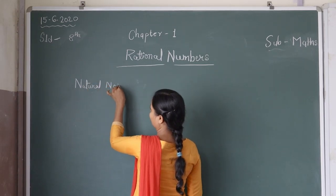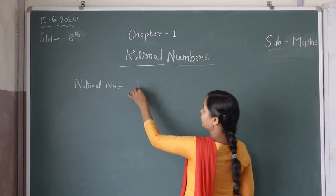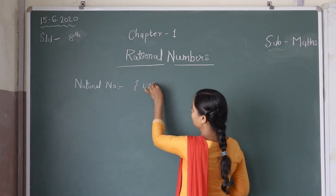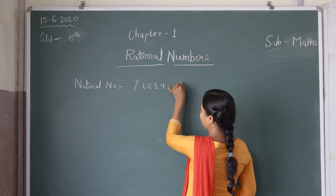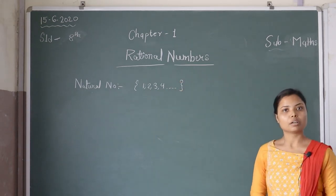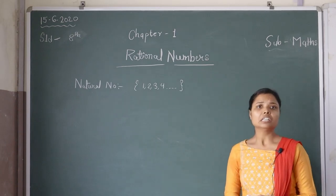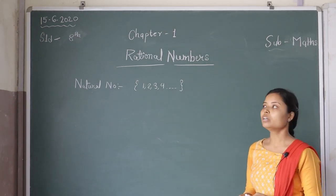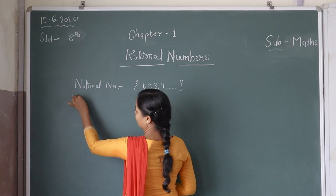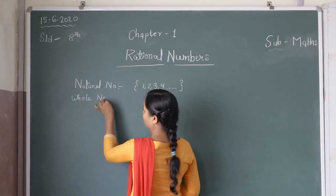The first concept is natural numbers. The set of positive numbers are called natural numbers. In simple terms, the counting numbers are called natural numbers. Next one is whole numbers.